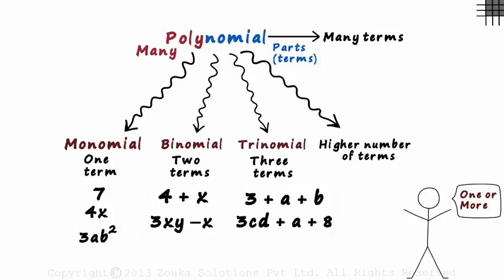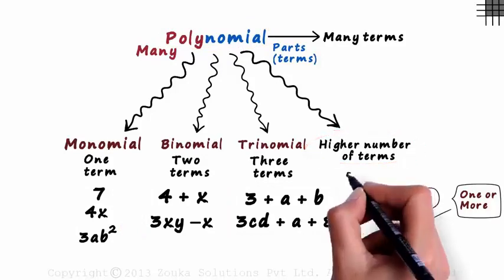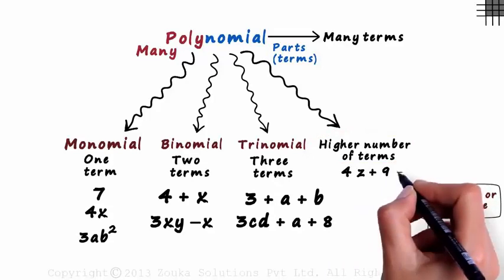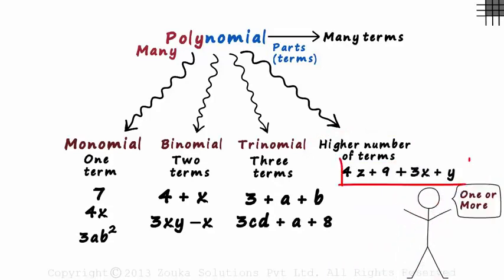And an example of the last type would be four z plus nine plus three x plus y. It has four terms in all. So remember, a polynomial is an expression which has one or more terms.